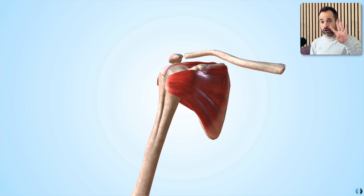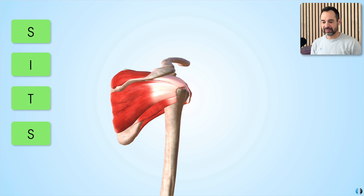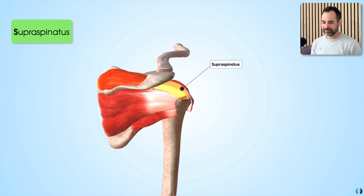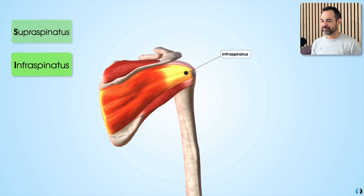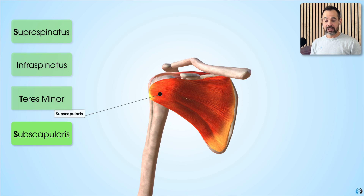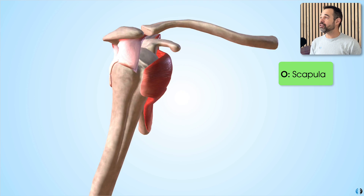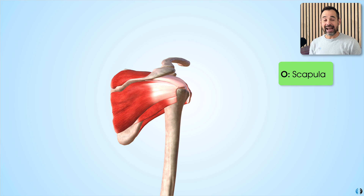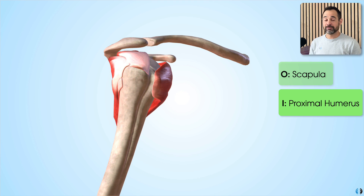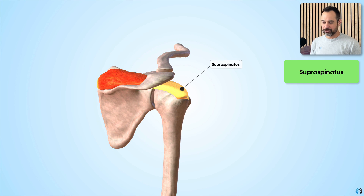We have four rotator cuff muscles, which we can remember with the acronym SITS. S stands for supraspinatus, I stands for infraspinatus, T stands for teres minor, and the final S stands for subscapularis. All of them originate on the scapula and all of them insert into the proximal humerus. That's a really important foundation point. Now let's break it down, starting with the supraspinatus muscle.